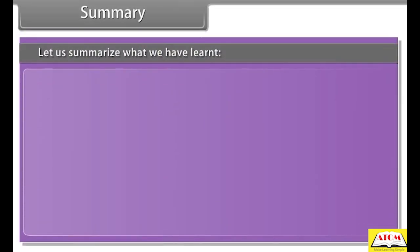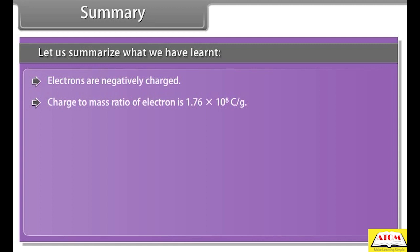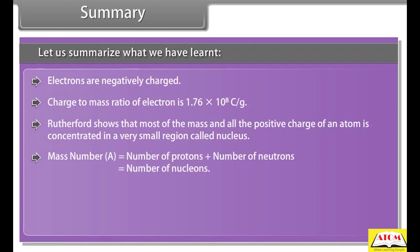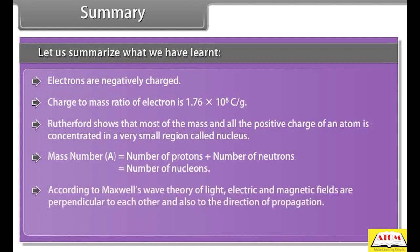Summary: Electrons are negatively charged. Charge-to-mass ratio of an electron is 1.76 × 10⁸ coulombs per gram. Rutherford showed that most of the mass and all the positive charges of an atom are concentrated in a very small region called the nucleus. Mass number A = number of protons + number of neutrons = number of nucleons. According to Maxwell's wave theory, electric and magnetic fields are perpendicular to each other and to the direction of propagation.